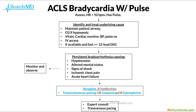First of all, we should assess the patient. We will see that they have a heart rate less than 50 beats per minute, and they must have a pulse in order to utilize this particular ACLS algorithm. Our first step is to identify and treat the underlying cause. We should maintain the patient's airway, give O2 if the patient is hypoxemic, put the patient on a cardiac monitor, continuous blood pressure monitor, as well as a pulse ox. We should try to get peripheral IV access and, if available, a quick 12-lead EKG.